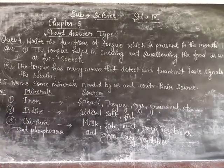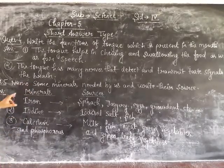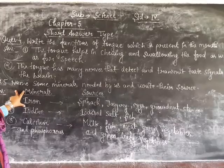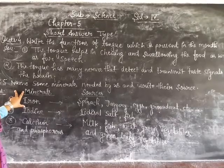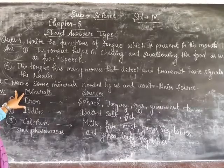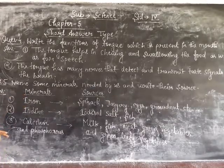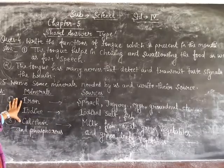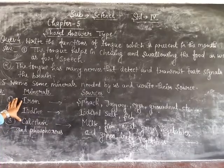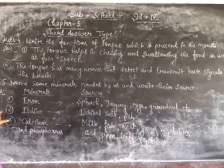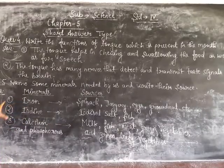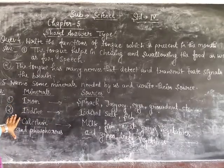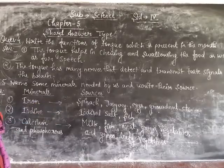Question number 5: name some minerals, find their sources and write them. There are many minerals available to us — here are the minerals and their sources.